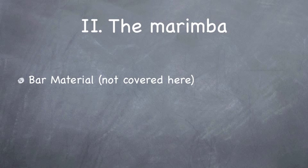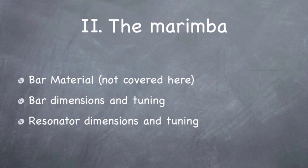Number two, the marimba. Bar material can have a huge impact on the sound, but I'm not going to cover that here. I really only play on rosewood marimbas. There's some great synthetic stuff out there and maybe we can cover that in another episode. But today I'm just going to be assuming that we're talking about concert quality rosewood marimbas. Okay. The bar dimensions and tuning and the resonator dimensions and tuning, these are very much a product of what brand we're talking about because everybody has their own patents and these things do have an effect on the sound. I think it's relatively small in comparison to some of the other variables, but they are definitely a significant factor.